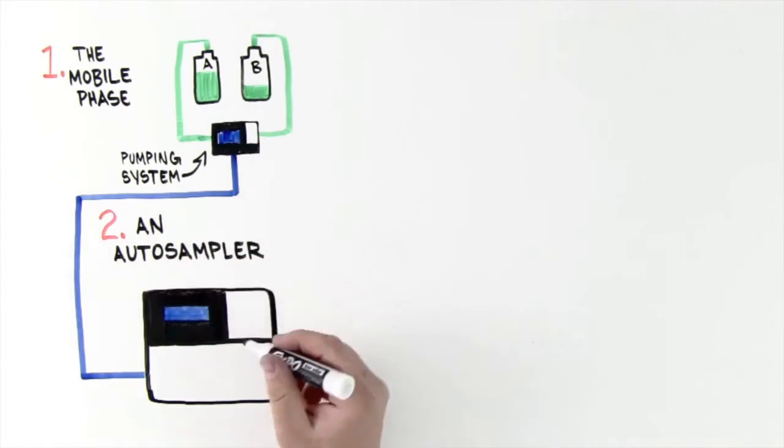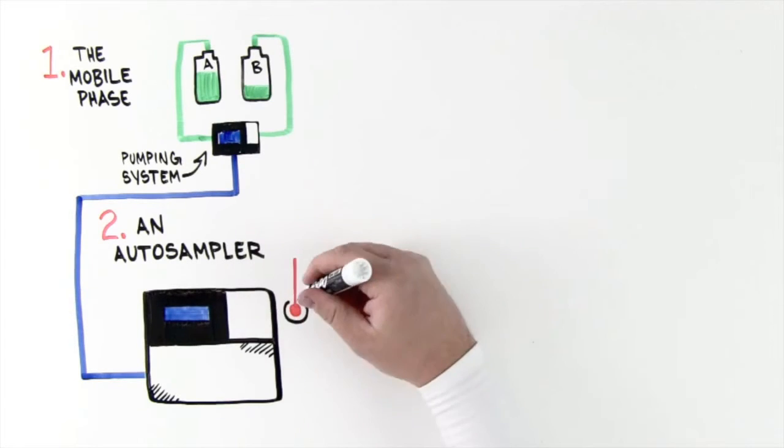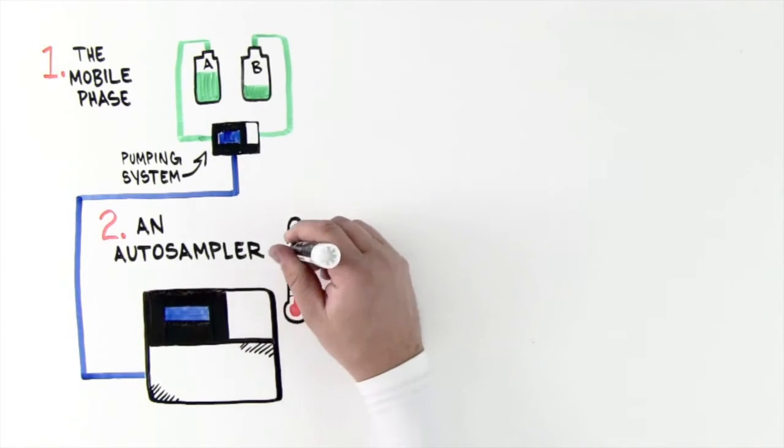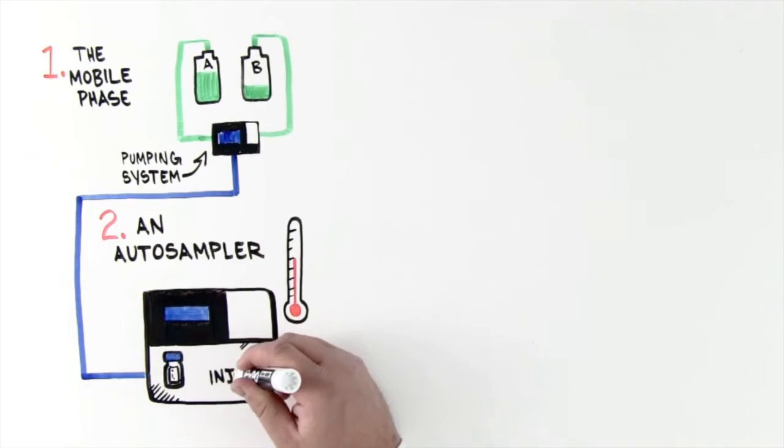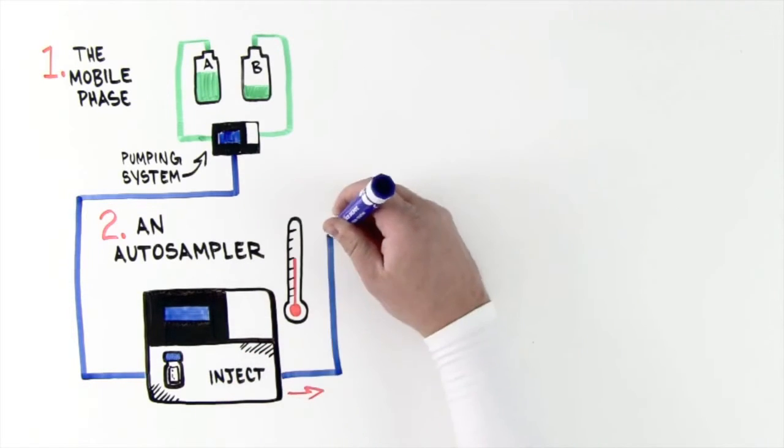When a separation needs to be performed, the auto-sampler switches the valve to fill the sample loop with the sample for analysis, then switches back to inject the sample. An auto-sampler allows the user to perform multiple sequences of runs unattended.